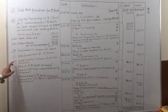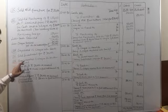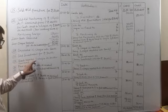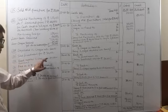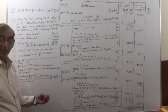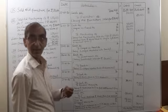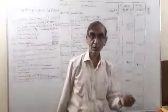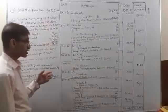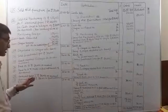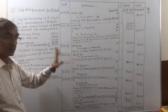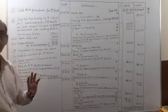Transaction 29: bank reported that P's deposited cheque is dishonored. Bank intimated that P's cheque is dishonored. When P's cheque has been dishonored, P will become our debtor again.